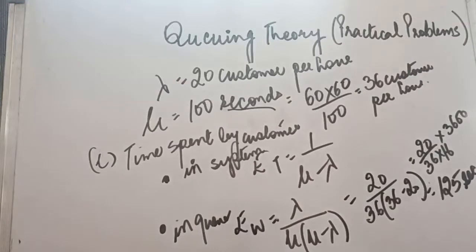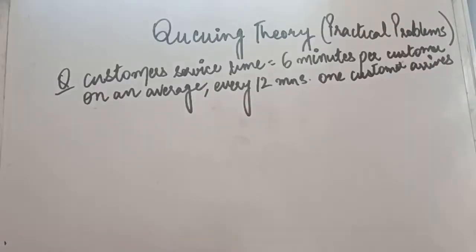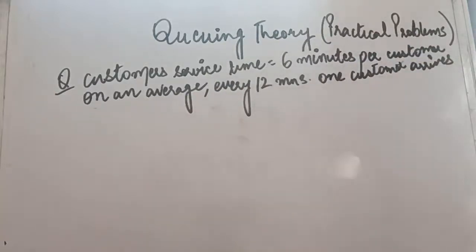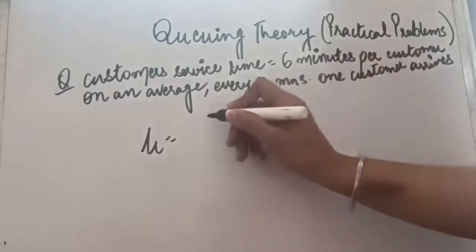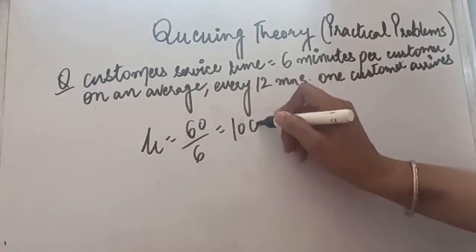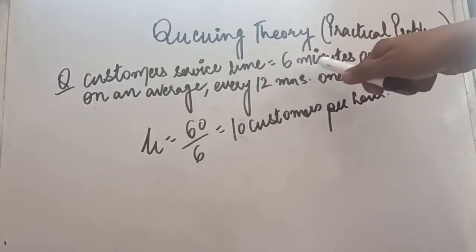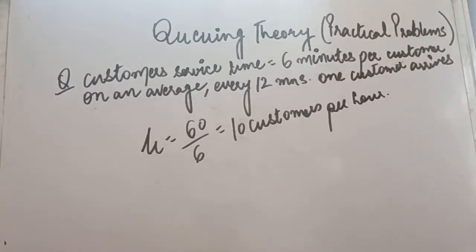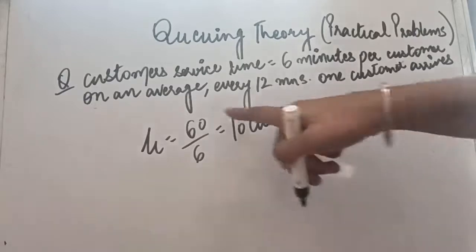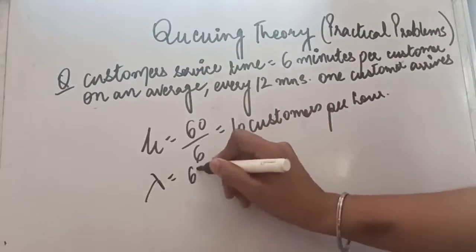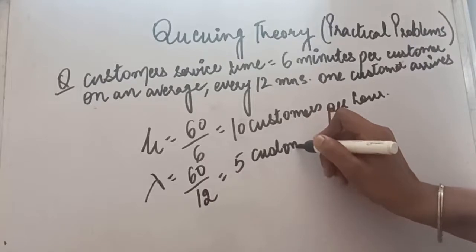In the next question, customers receive 6 minutes of service per customer, so mu equals 60 divided by 6, giving 10 customers per hour. On average, one customer arrives every 12 minutes, so lambda equals 60 divided by 12, giving 5 customers per hour.